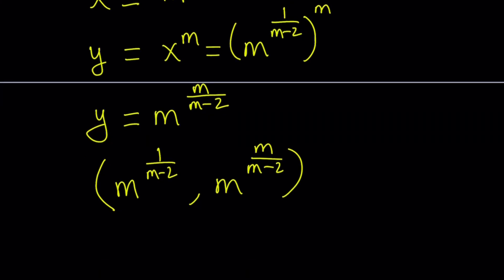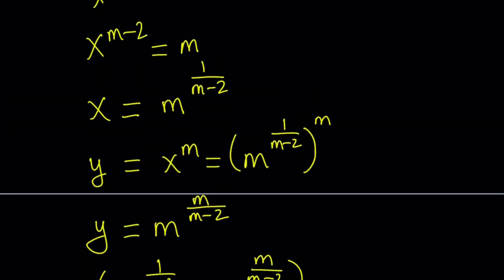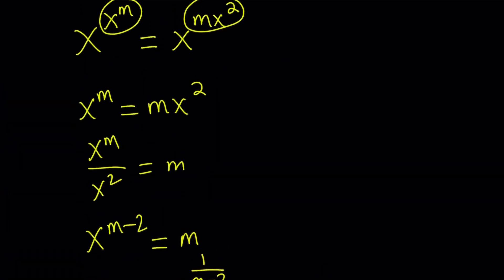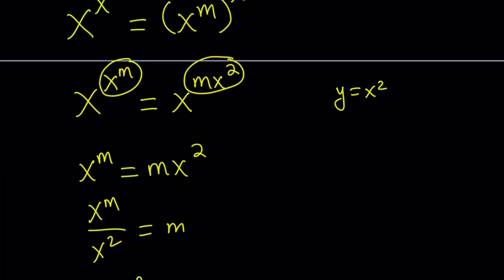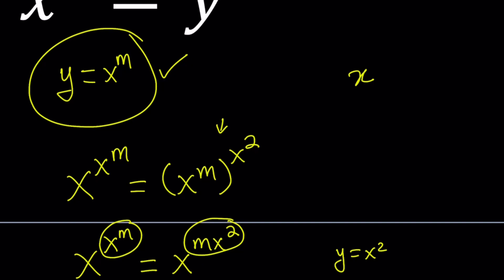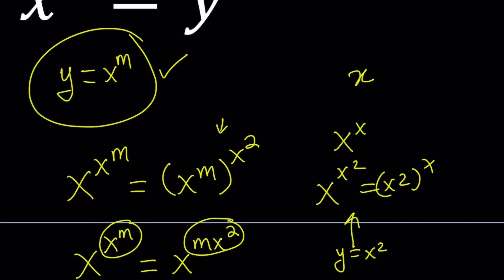The first number represents x and the second represents y. Now m is a parameter, so you can replace m with many different values. The only restriction is m cannot equal 2. What happens if m equals 2? Just suppose y equals x squared, and then you get x to the power x squared equals x squared to the power x, which is a very easy equation. This gives you x to the x squared equals x to the 2x, so x equals 0 or x equals 2.